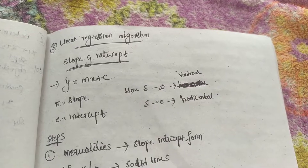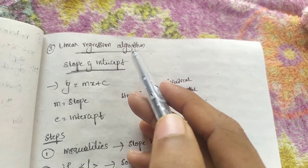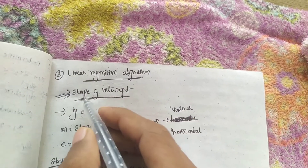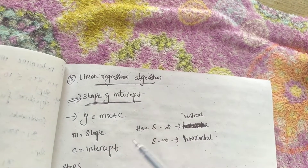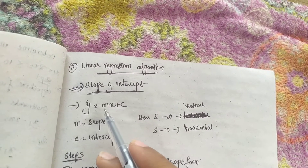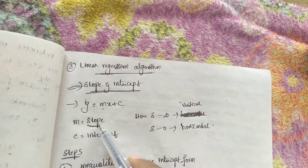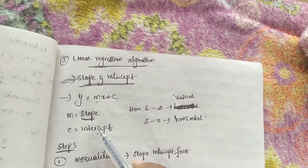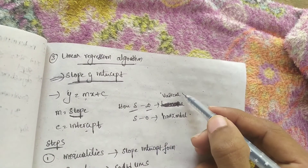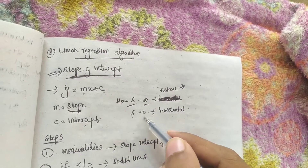Hello guys, welcome to my YouTube channel. In this video we discuss the linear regression algorithm using slope and intercept concepts. In slope-intercept form, y equals mx plus c, where m indicates the slope and c indicates the intercept. When the slope value is infinity, we draw the graph vertically, and when the slope value is zero, we draw the graph horizontally.